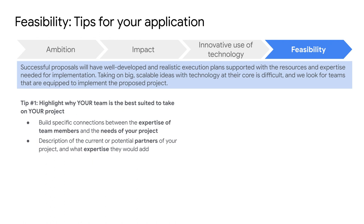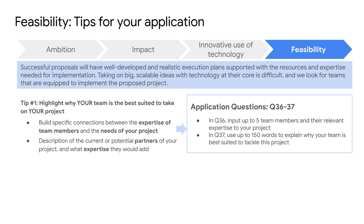This brings us to our final criteria, feasibility. An idea is just an idea unless there's a realistic plan to make it happen. In this section, we're assessing your organization's capacity to address the problem you're trying to solve. Our first tip is to showcase your thinking behind your team, your human resources. In questions 36 and 37 of the application, describe why your team is specifically best suited to take on your project. Why is your team the most credible? We'd love to see how you connect the expertise of team members to the core needs of your project. And if you have partners, make sure to highlight the additional value they will be bringing.